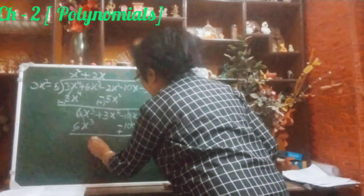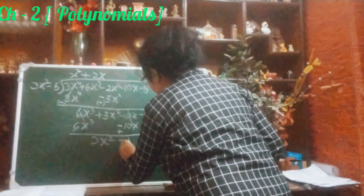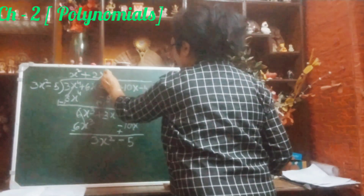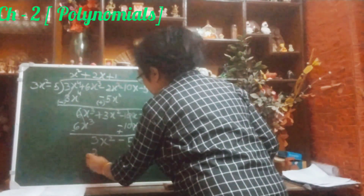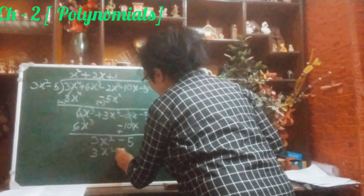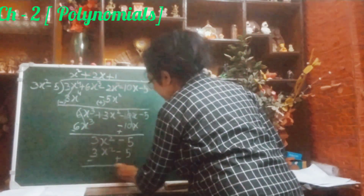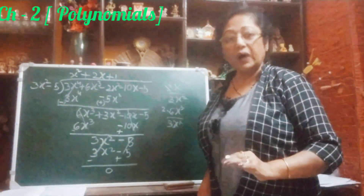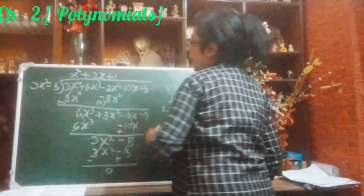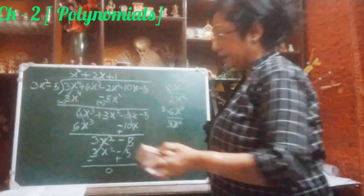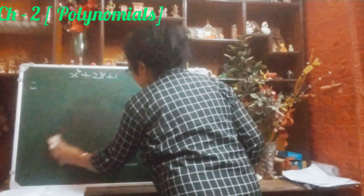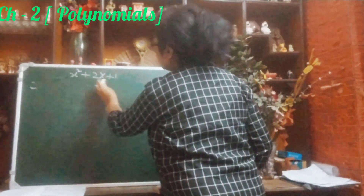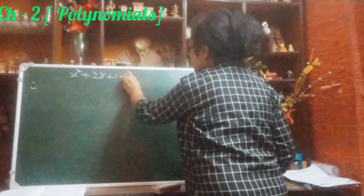What we have left is 3x² - 5. Here also 3x² - 5, so we will put +1. Multiply: 1 × (3x² - 5) = 3x² - 5. Change the sign and cancel — our remainder is 0. So what we got as the quotient is 3x² + 2x + 1.